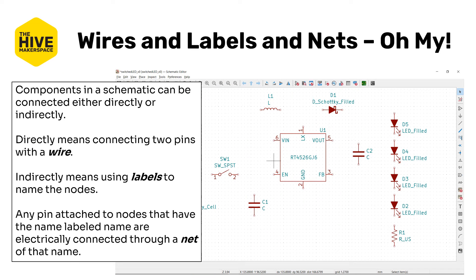So components in a schematic can be connected either directly or indirectly. Directly means that two pins on two components are connected with a specific wire — an actual line on the schematic. Indirectly means using labels to name the nodes, and then as long as the two pins that are supposed to be connected are named the same thing, they are connected through a net — electrically connected through what's called a net of that name. I'll demonstrate this in a few minutes.